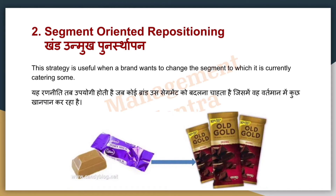Second is segment-oriented repositioning. This strategy is useful when a brand needs to change their segment from what it currently targets, so that they can target new segments. For example, if a brand only made clothes for girls, then they expanded to women's and men's — that is segment-oriented repositioning.